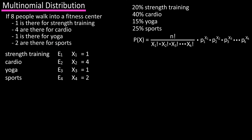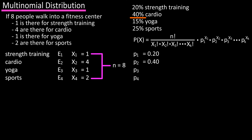Now that we have all of the x's assigned values, we can sum them up, and that totals eight, which is the n value in the formula. The p values — the probability values of each of the four different events — were given in the question. For event one (strength training), p1 = 0.20. For event two (cardio), p2 = 0.40. For event three (yoga), p3 = 0.15. And for event four (sports), p4 = 0.25.